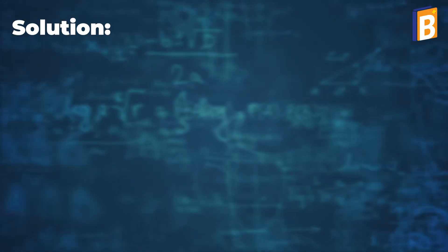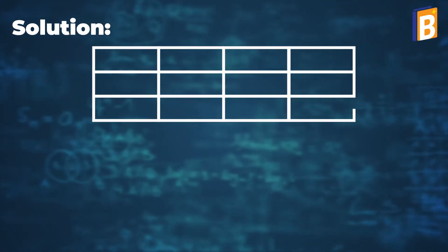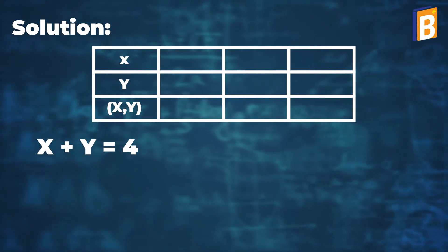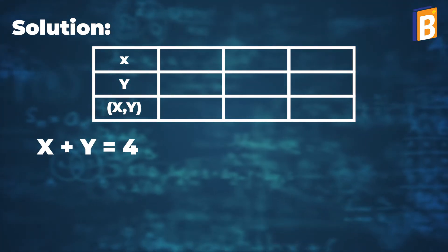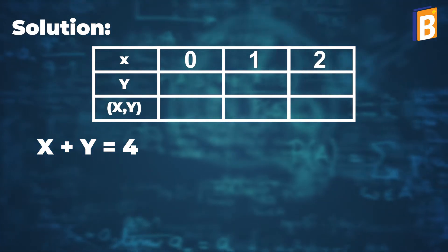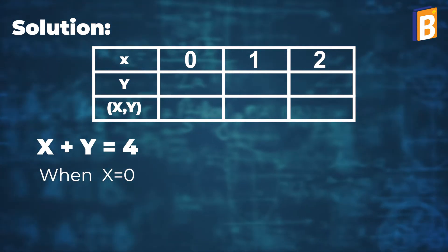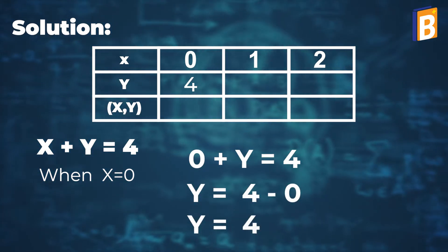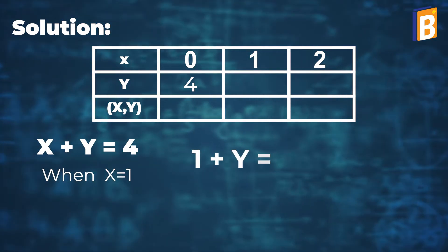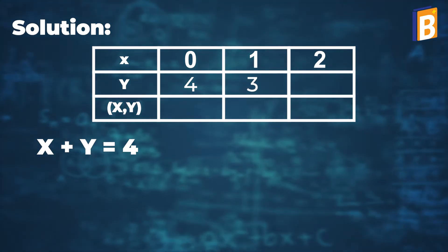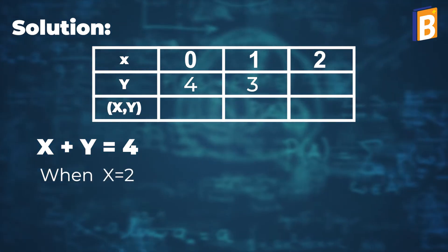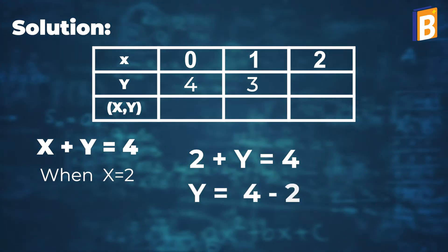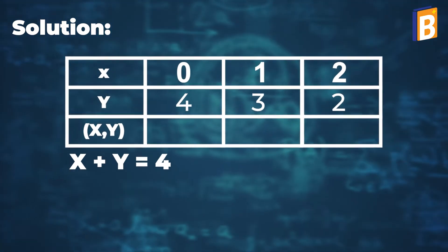Now first we will make a table for finding the values of x and y for both linear equations. We will start from linear equation x plus y equal to 4. Let us assume the values of x are 0, 1, and 2. When x equal to 0, we put this value in x plus y equal to 4, so 0 plus y equal to 4, giving y equal to 4. For x equal to 1, y will be 3. For x equal to 2, we get 2 plus y equal to 4, so y equal to 2.